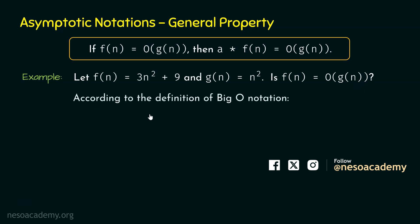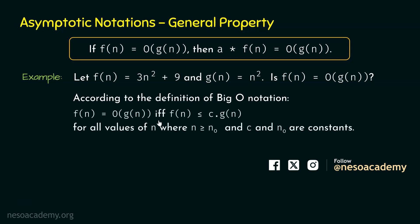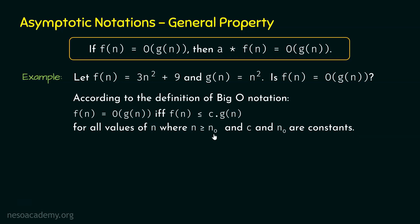Let's prove F(n) is O of G(n) by applying the definition of Big-O notation. According to the definition, F(n) is O of G(n) if and only if F(n) is less than or equal to C times G(n) for all values of N where N is greater than or equal to N₀, and C and N₀ are positive constants. Let's assume some value of C.